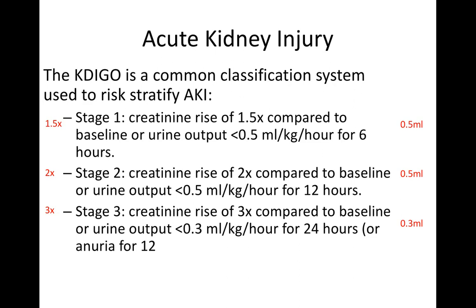Acute kidney injury can be stratified according to either creatinine or urine output. There are three stages. Creatinine is raised 1.5 times in stage 1, 2 times in stage 2, and 3 times in stage 3. For urine output, stage 1 is less than 0.5 ml per kg per hour; stage 2 is the same threshold but for 12 hours; and stage 3 is 0.3 ml per kg per hour over 24 hours.